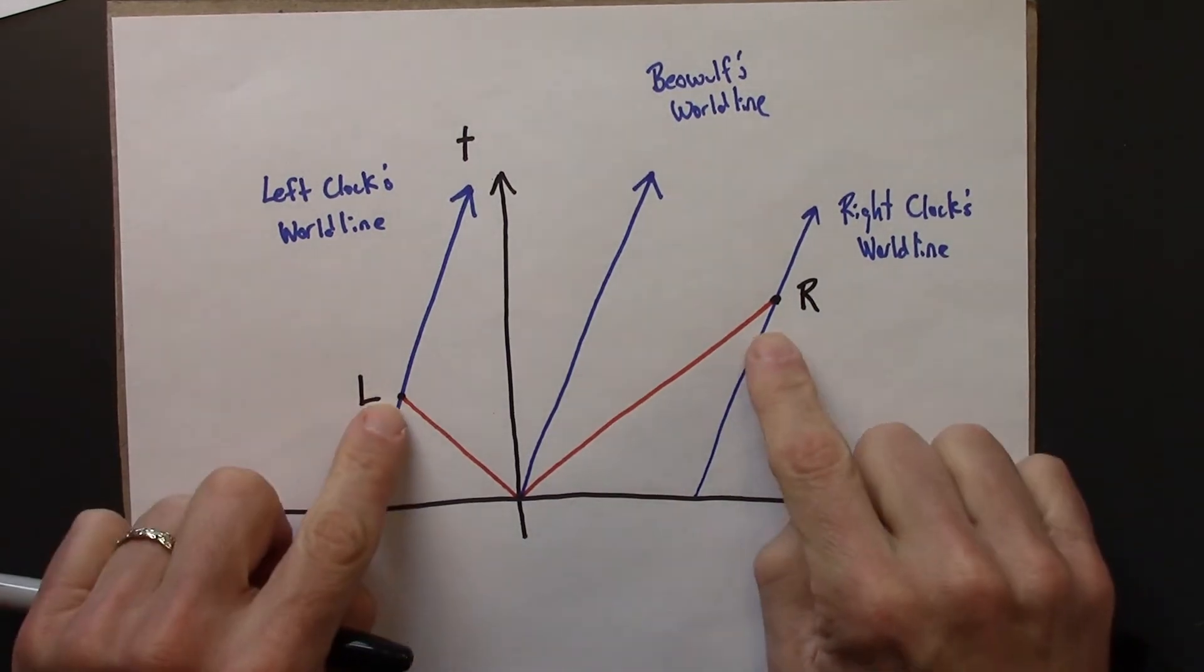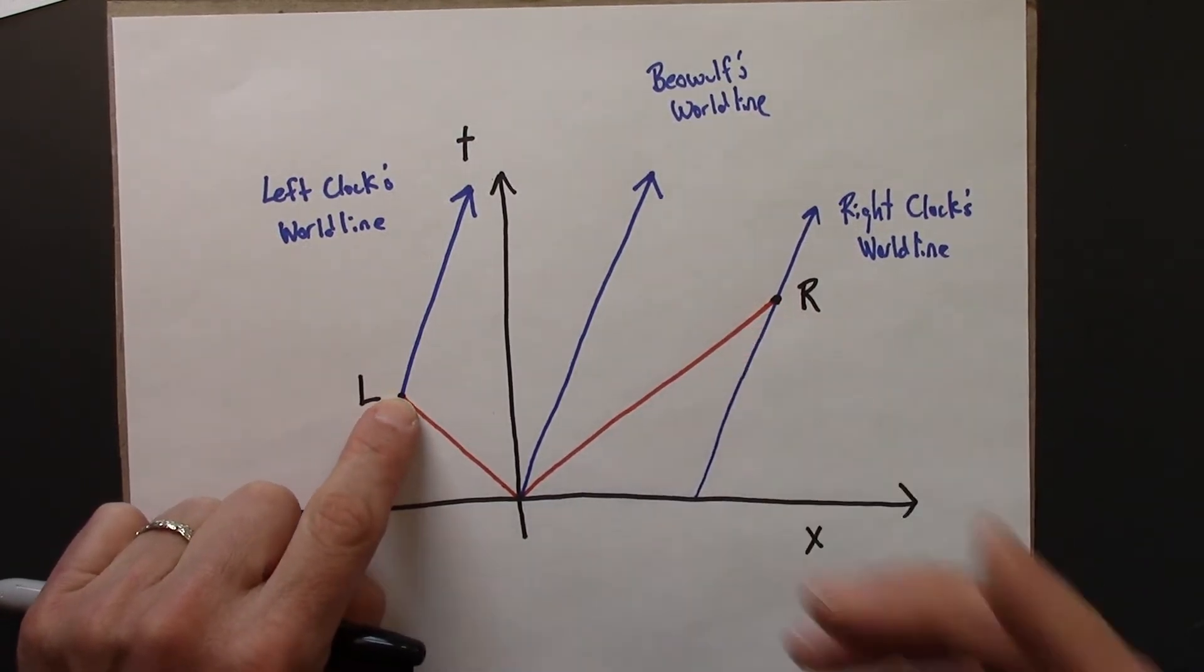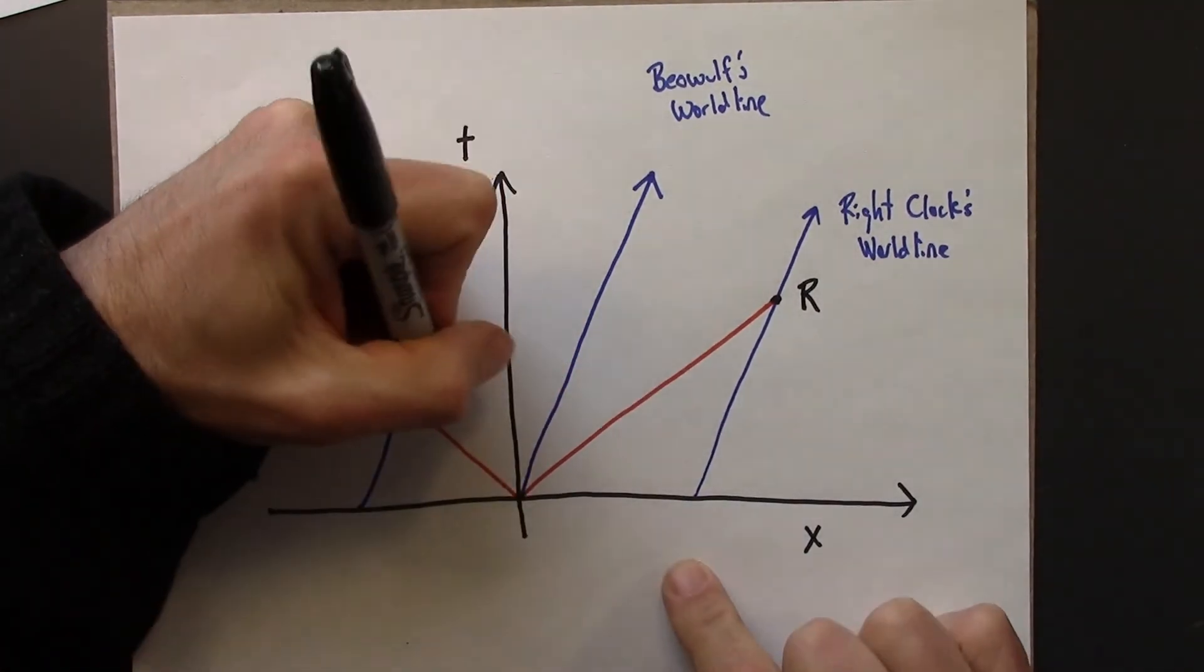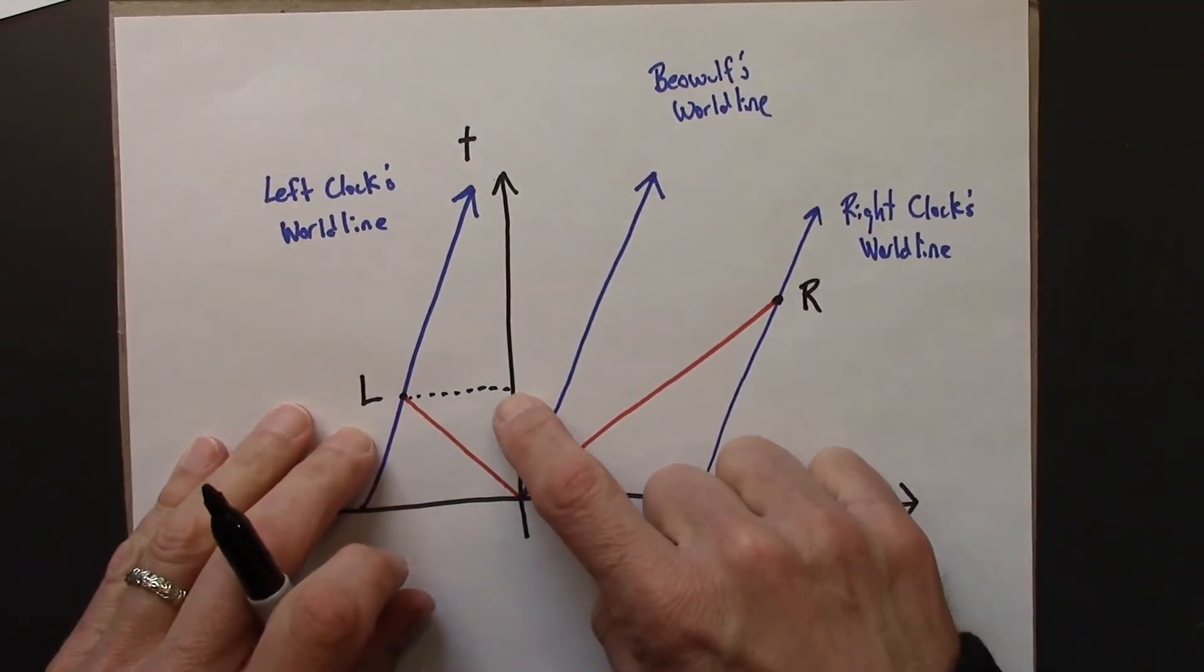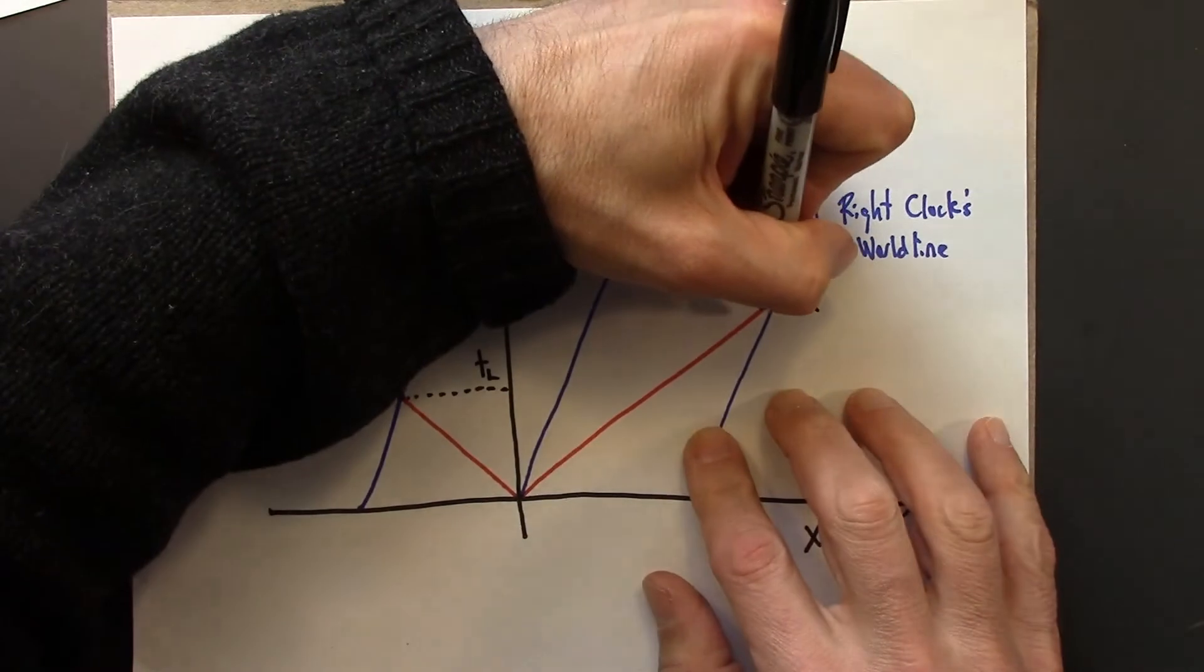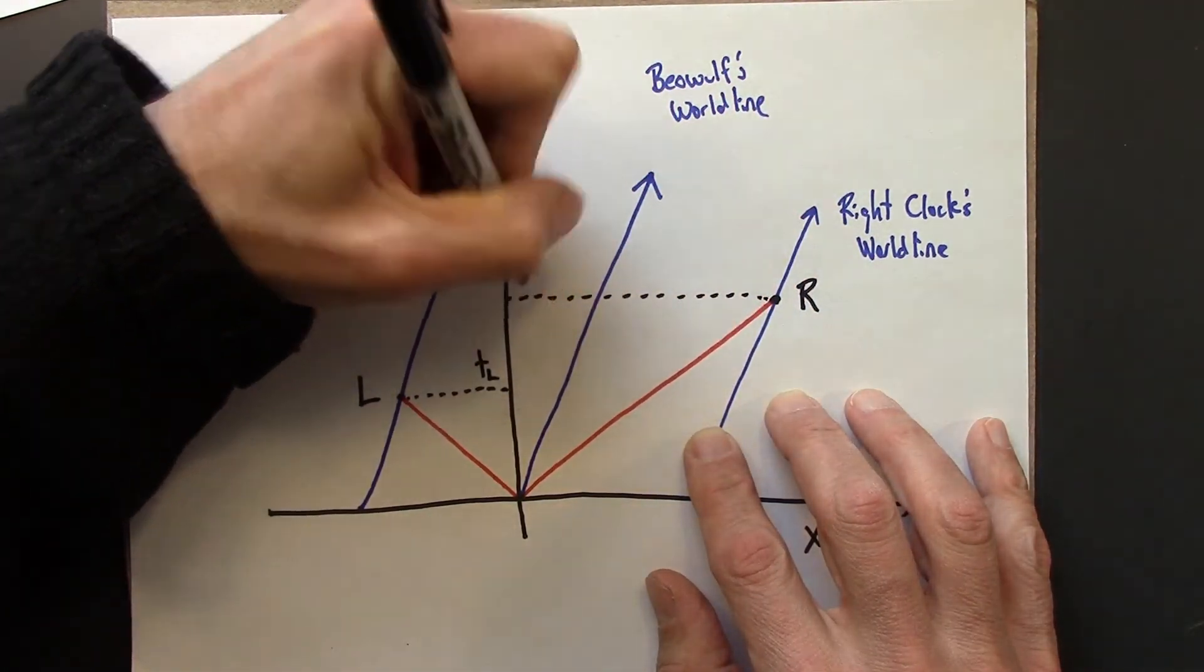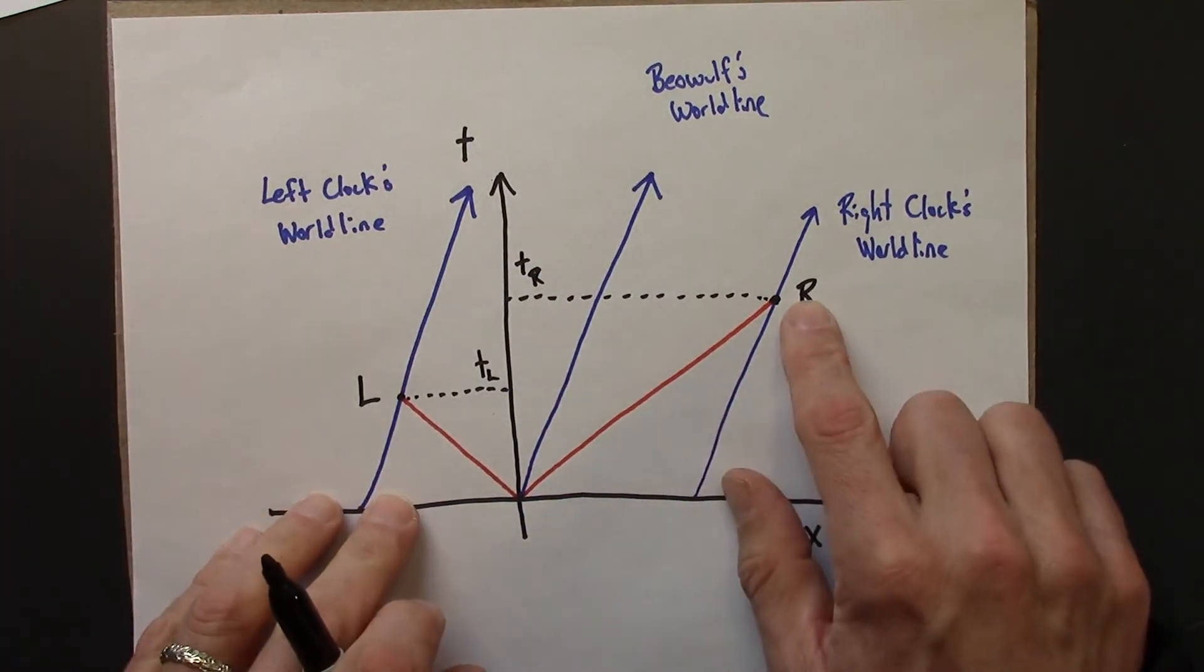So we can read the space-time coordinates, read off the space-time coordinates of these two events. That's what we can do with space-time diagrams. So let's do that. So this value on the t-axis, that would be what we'll call tL. And this value would be tR.